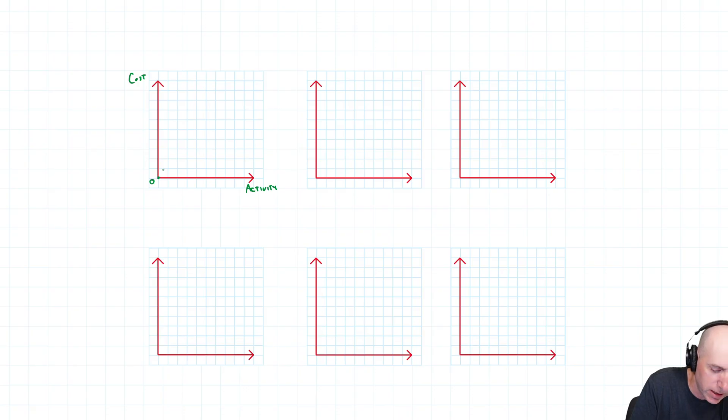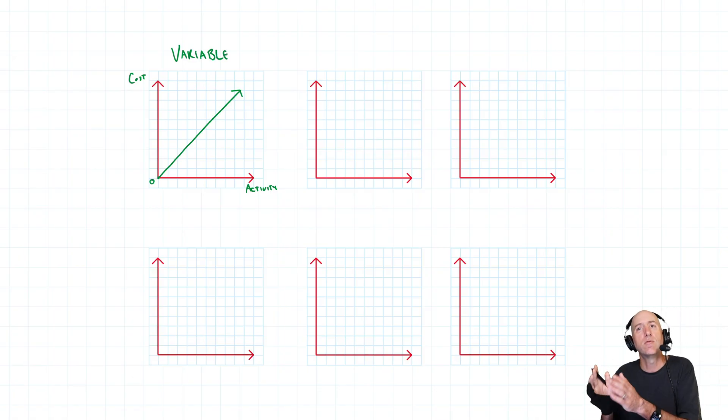If I look at my aluminum cost compared to my activity, which is making cans of Pepsi, it's going to graph like this. If I make zero cans of Pepsi, I spend zero dollars in aluminum. If I make a million cans of Pepsi, I spend hundreds of thousands of dollars in aluminum. The cost is going to behave like this. You and I know that this would be an example of a variable cost - a cost that moves directly in proportion.